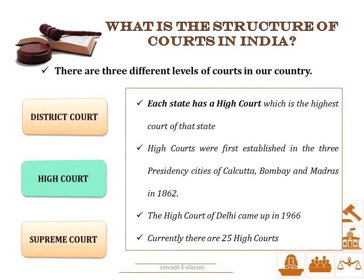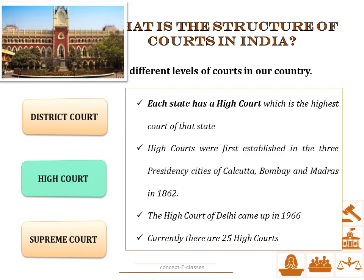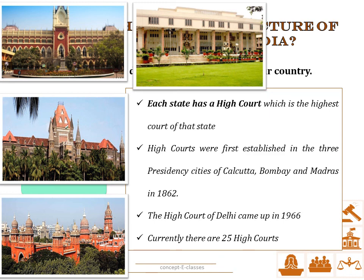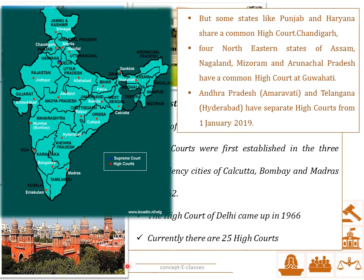Each state has a High Court which is the highest court of that state, or in other words, the supreme judicial body in a state. High Courts were first established in the three presidency cities of Calcutta, Bombay, and Madras in 1862. The High Court of Delhi came up in 1966. Even though our country has about 29 states and seven union territories, there are only 25 High Courts in our country. That is because some states like Punjab and Haryana share a common High Court in Chandigarh. The four northeastern states of Assam, Nagaland, Mizoram, and Arunachal Pradesh have a common High Court at Guwahati. Andhra Pradesh and Telangana have separate High Courts from 1st January 2019. At the top is the Supreme Court, located in New Delhi, presided over by the Chief Justice of India. The decisions made by the Supreme Court are binding on all courts in India.